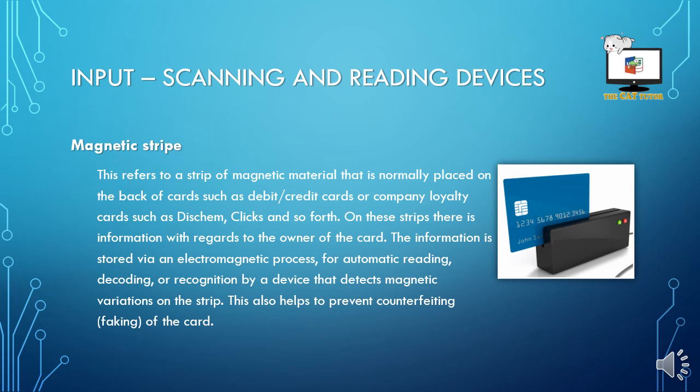Magnetic strip refers to a strip of magnetic material that is normally placed on the back of cards like debit cards, credit cards, company loyalty cards, smart jumper cards, and so forth. On these strips there is information regarding who owns the card, how much is on it, and other card details. It is stored via an electromagnetic process for automatic reading, decoding, or recognition by the device that detects the magnetic variation on the strip. This also helps prevent counterfeiting or faking these cards — it's easy to make a card, but not as easy to make it real.